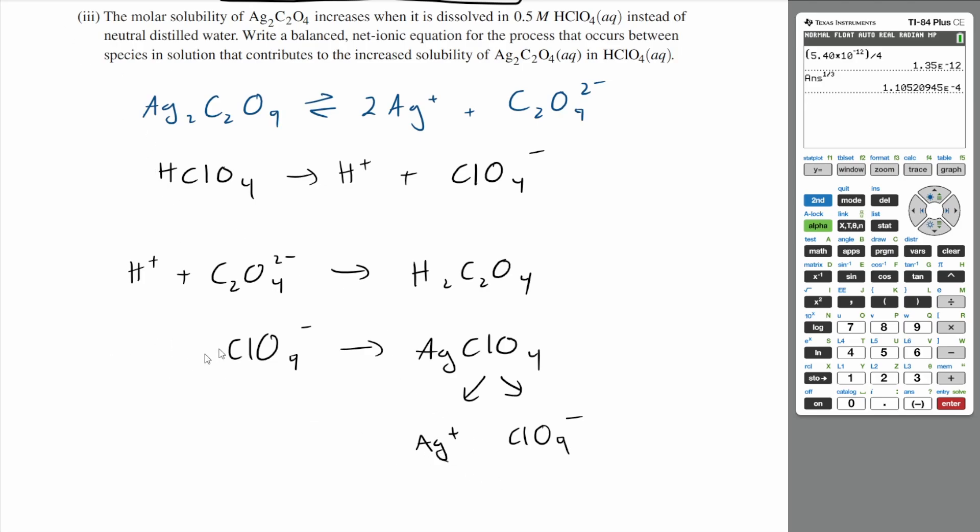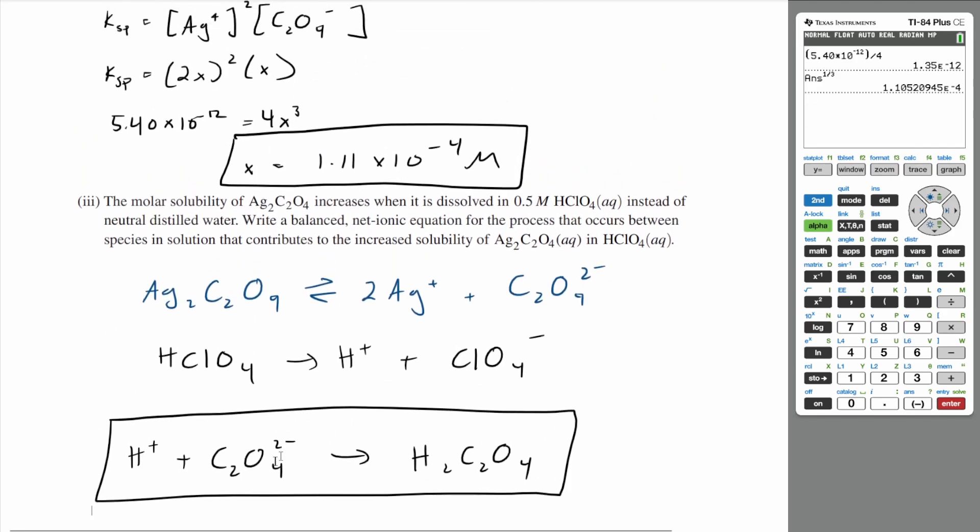So the only reaction that really occurs is the H+ sees your oxalate ion and produces oxalic acid. And so why does this increase the solubility of silver oxalate? Because if you realize what it really does is it uses up your oxalate ions.